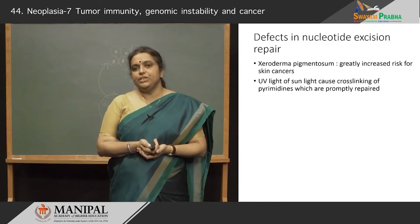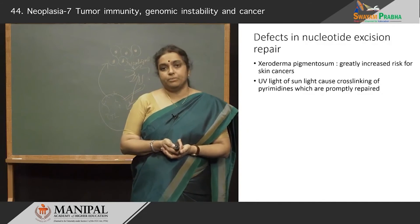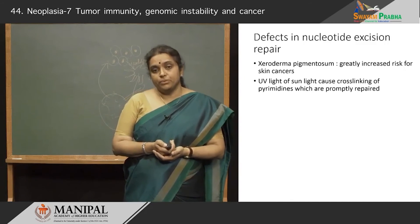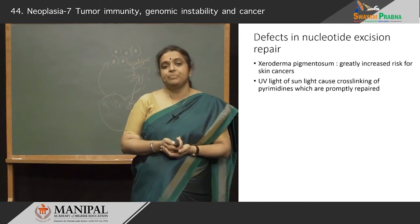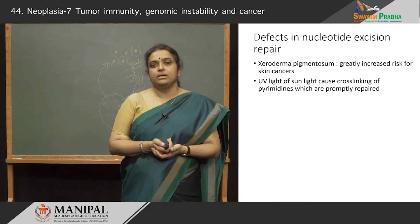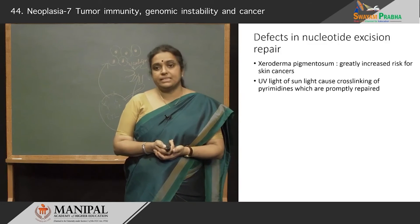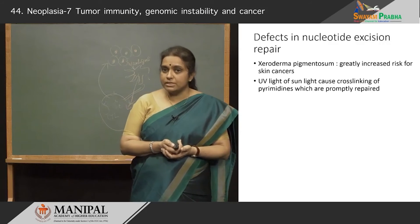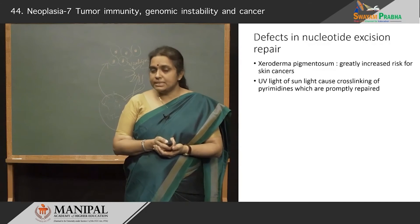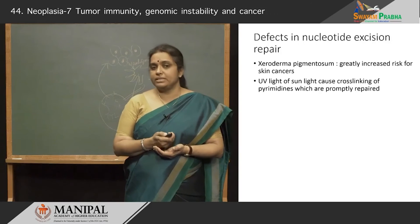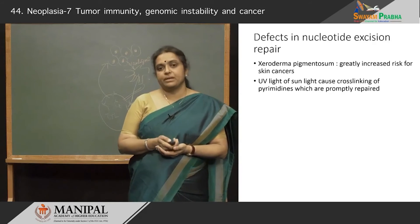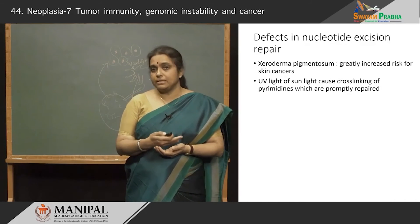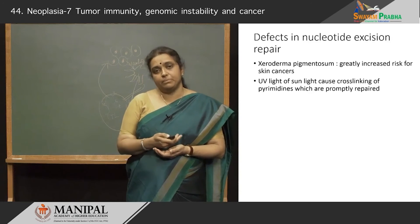The second defect is in nucleotide excision repair, and the prototype disease is xeroderma pigmentosum. These individuals are at increased risk for developing skin cancers. The UV light from sunlight causes cross-linking of DNA in these patients, and these are not repaired due to defects in nucleotide excision repair. So these patients develop all kinds of skin cancers at a very early age, especially in sun-exposed areas — multiple cancers develop in these patients.